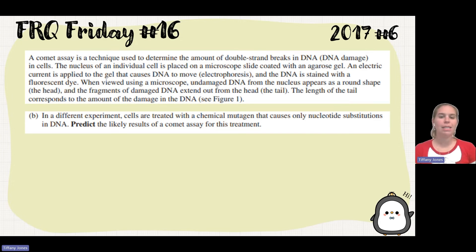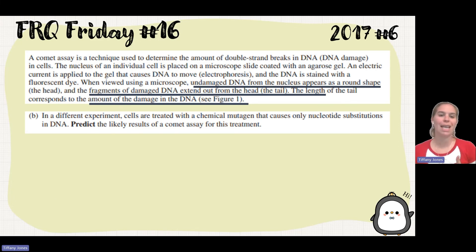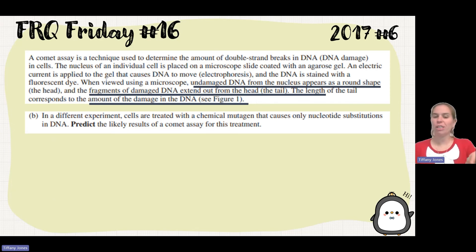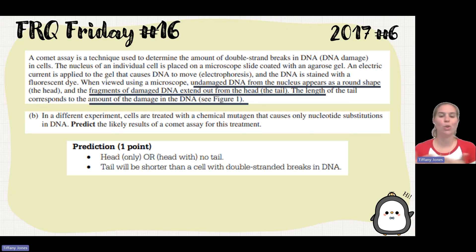They then move on and say that in a different environment, cells are treated with a chemical mutagen that causes only nucleotide substitutions in DNA. Looking back at the question, undamaged DNA appears as a round shape — the head — versus fragments of damaged DNA forming the tail, with tail length corresponding to the amount of damage. With a nucleotide substitution, you're just substituting one nitrogenous base for another — so the strand will not break or become shorter. It's going to be the exact same size, so you'd see a head only, or a head with no tail. The tail would be shorter than one that had double-strand breaks.